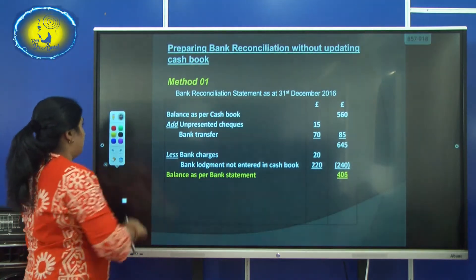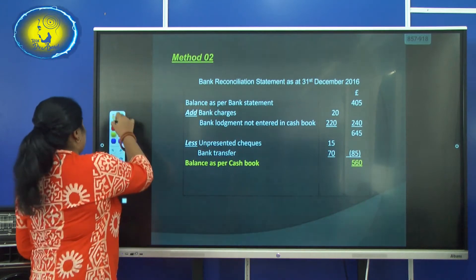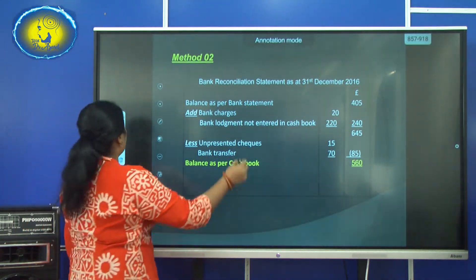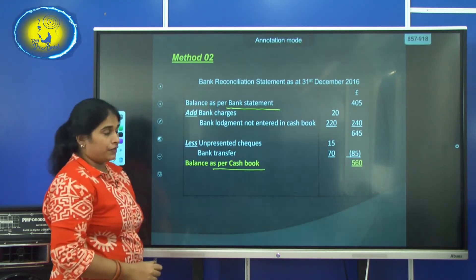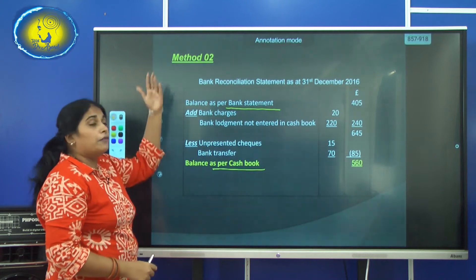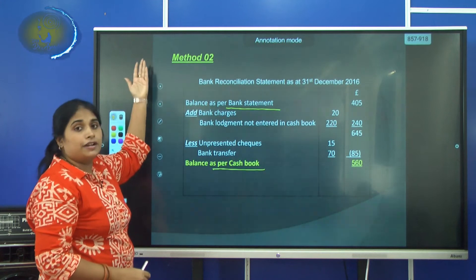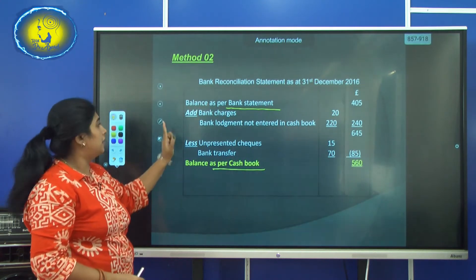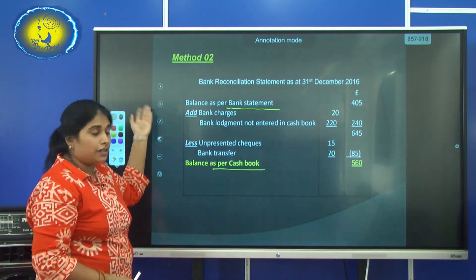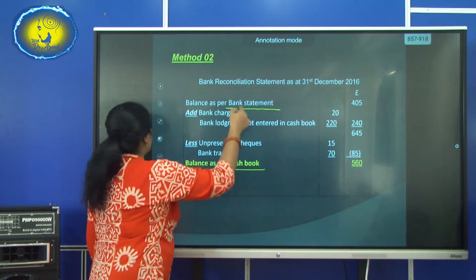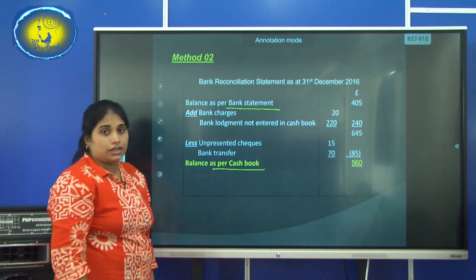Now we will see the second sub-method of without updating the cash book. In this method, we start with the bank statement balance and end with the cash book balance. Whatever you added in the first method, you subtract here; whatever you subtracted, you add here. The opposite operations apply when starting with the bank statement balance and ending with the cash book balance.